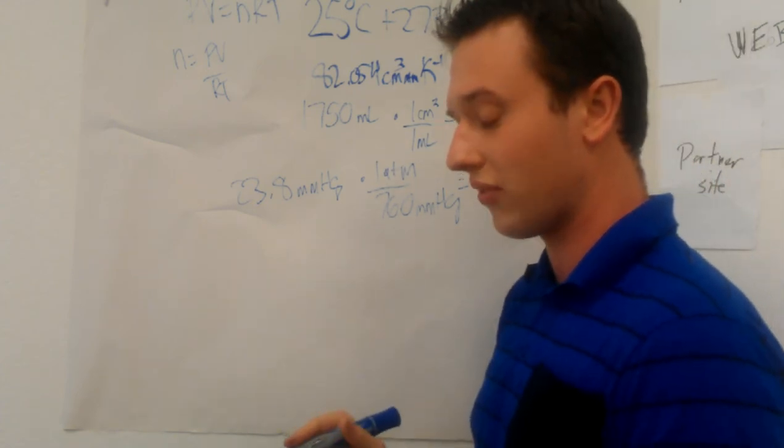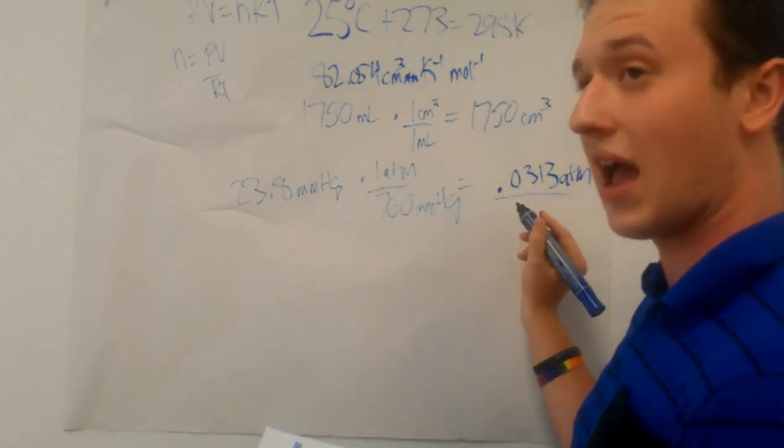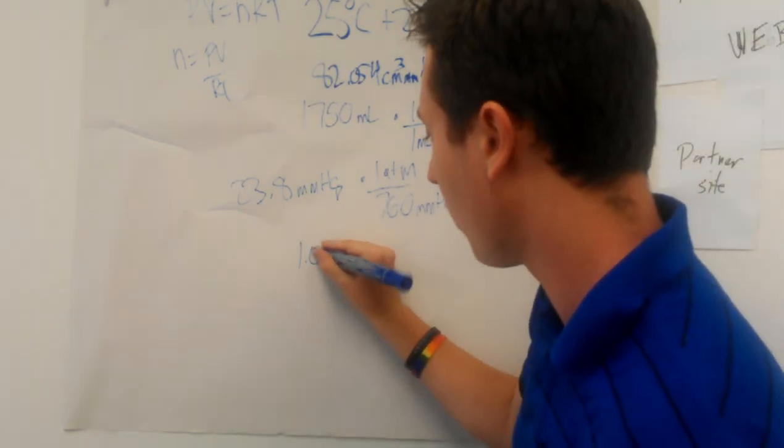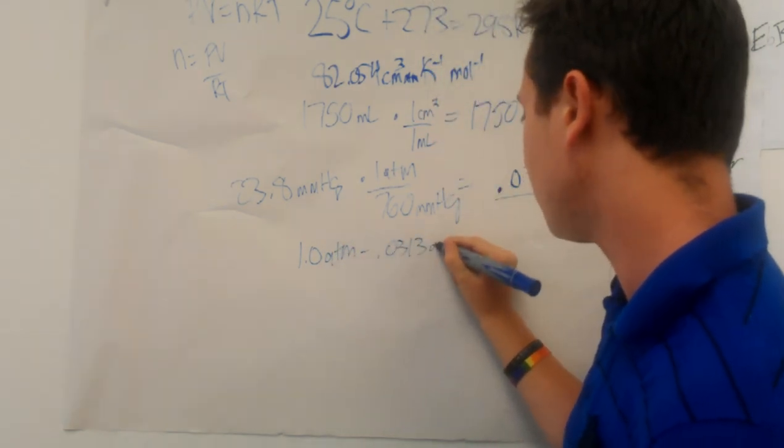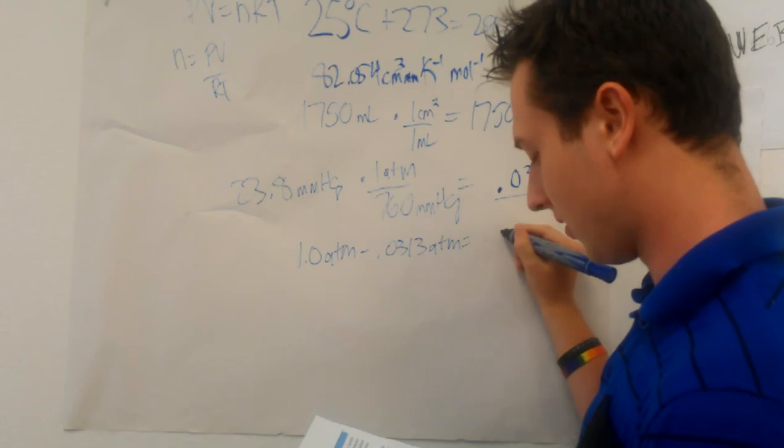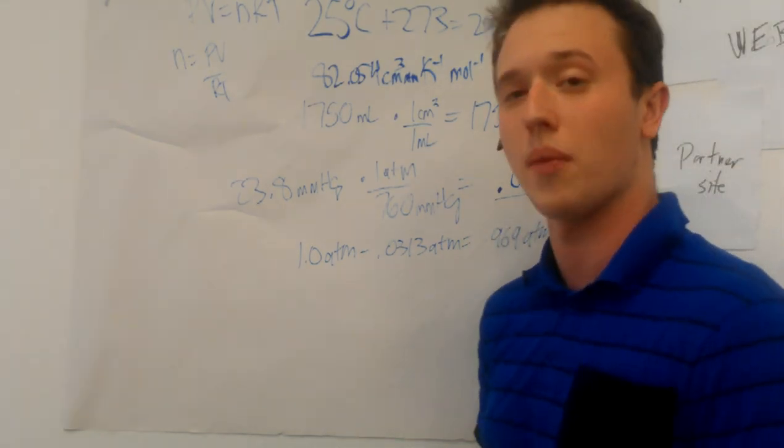We were given that initial pressure of 1.0 atm. We're going to need to subtract this. So 1.0 atm minus 0.0313 atm equals 0.969 atm. That's the pressure we're going to be plugging into our equation.